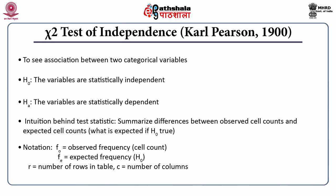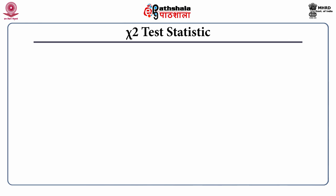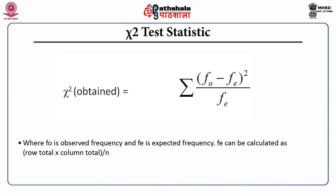R is the number of rows in the table while C is the number of columns. The chi-square test statistic is computed using this formula: chi-square obtained equals sigma of (FO minus FE) squared divided by FE. FO is observed frequency while FE is the expected frequency given the null hypothesis is true.